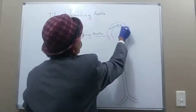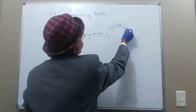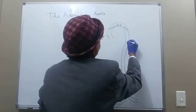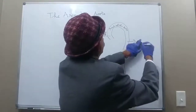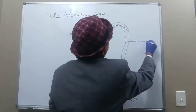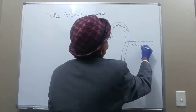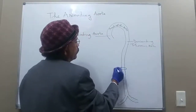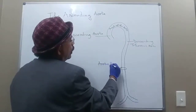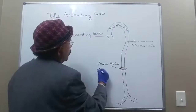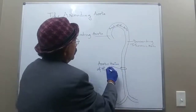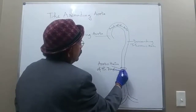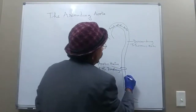The arch of the aorta continues as the descending thoracic aorta. Below the aortic opening of the diaphragm — the aortic hiatus — the descending thoracic aorta becomes the abdominal aorta.